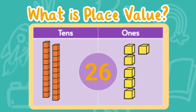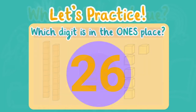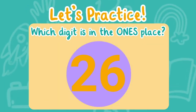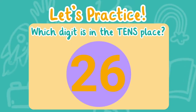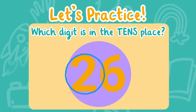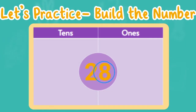26 is made up of six ones and two tens. Now let's practice together one more time before we start our game. Which digit is in the ones place? Six — six is in the ones place. Which digit is in the tens place? Two — two is in the tens place. Two tens, six ones.